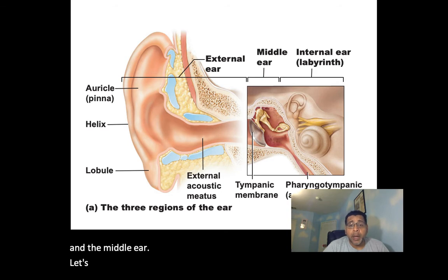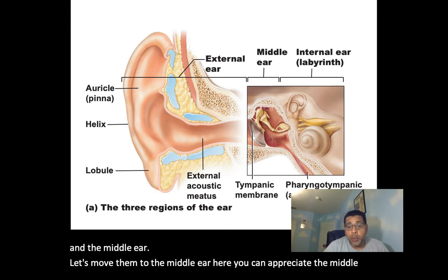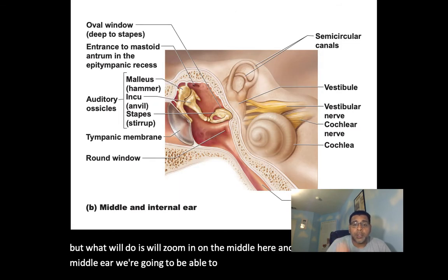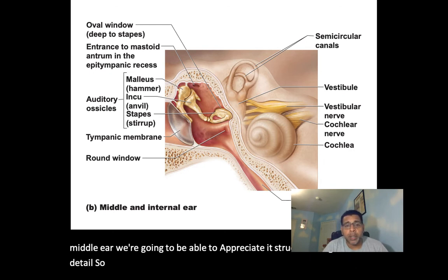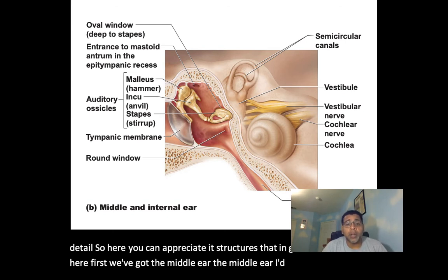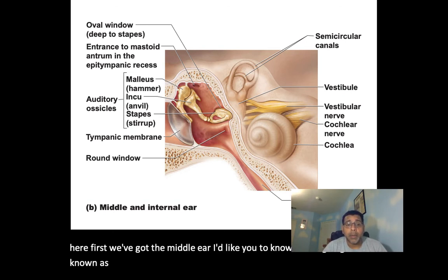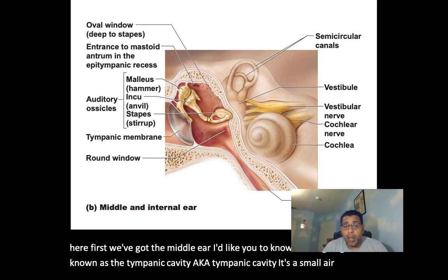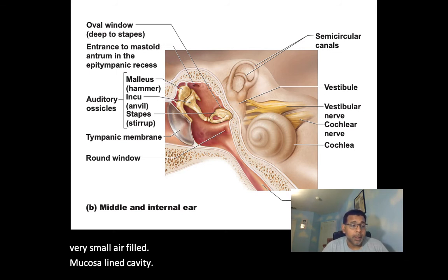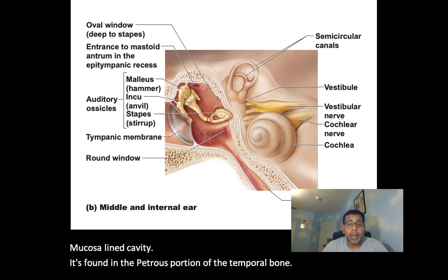Moving to the middle ear: zooming in, we can appreciate its structures in greater detail. The middle ear is also known as the tympanic cavity — a small, air-filled, mucosa-lined cavity found in the petrous portion of the temporal bone.